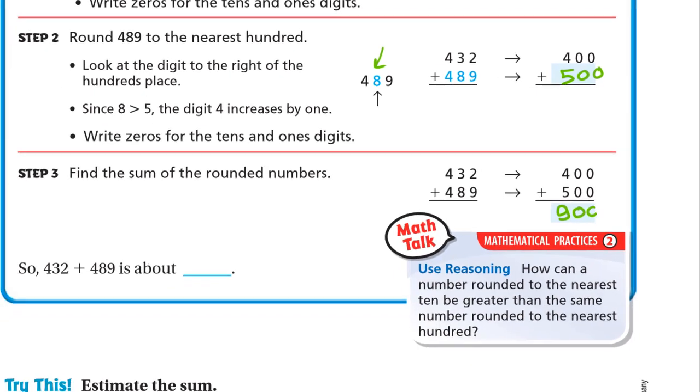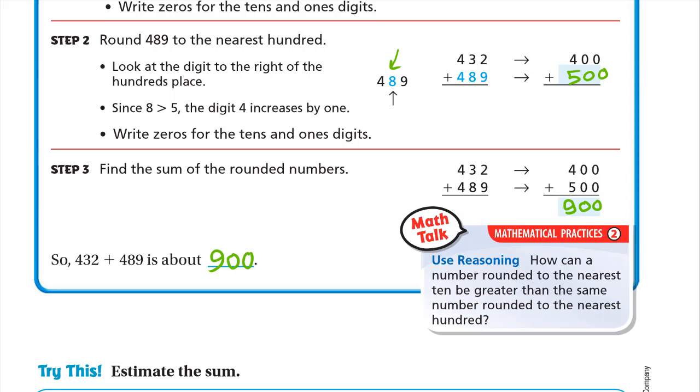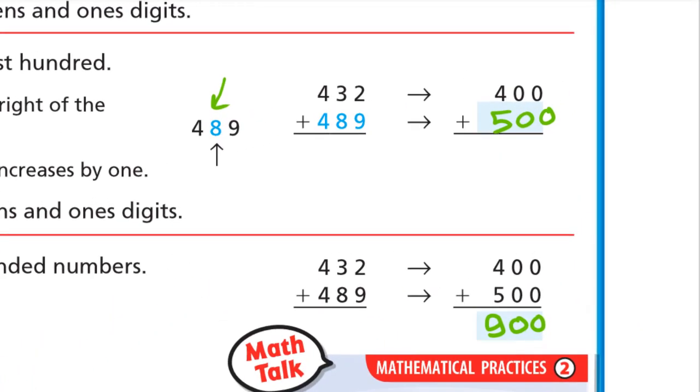What about the 489? Here the 8 is one of the strong digits, so the 400 will be 500. Now we add 400 plus 500 and we will have 900. So it will be about 900. The 432 we round to the nearest 100. The 3 is weak so we keep it 400. The 489, the 8 is strong, so we make the 4 into 500. We add 400 plus 500 equals 900.